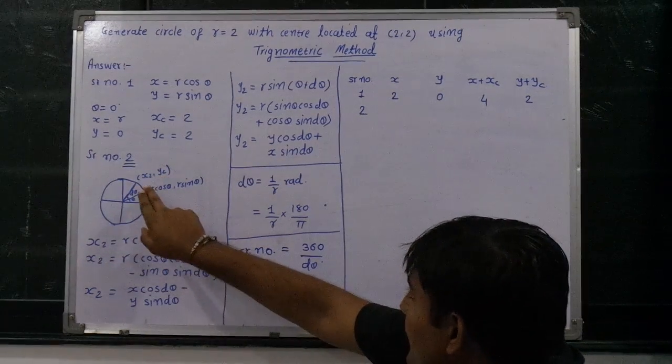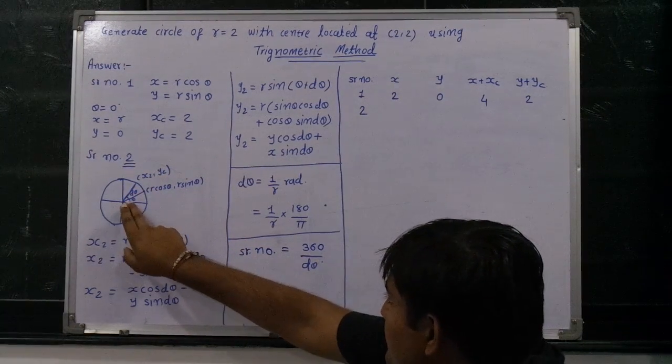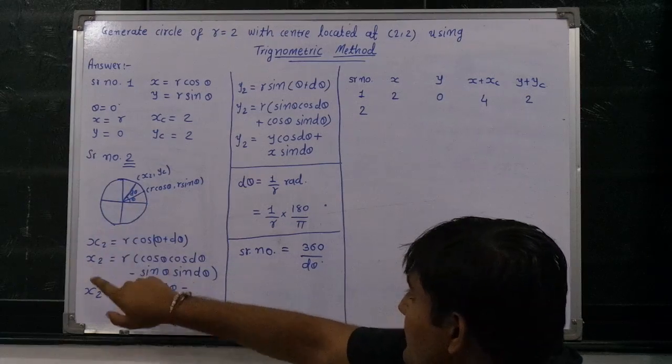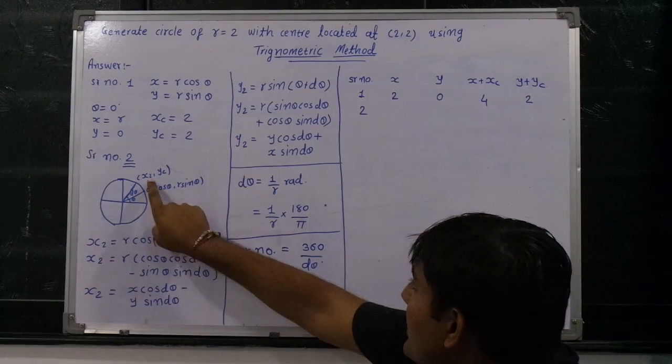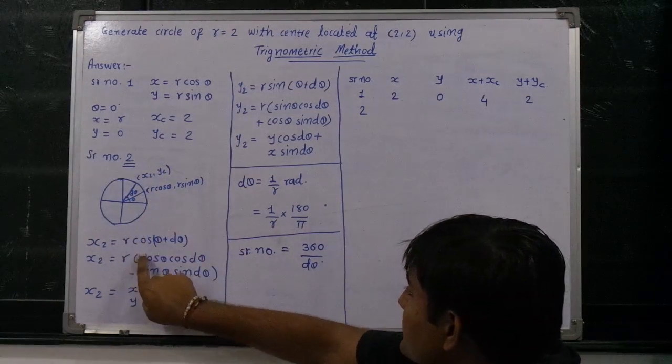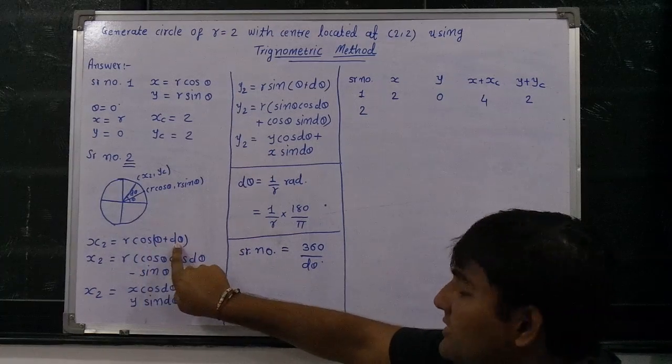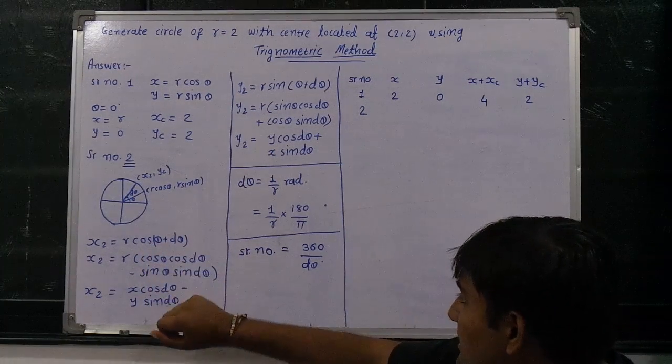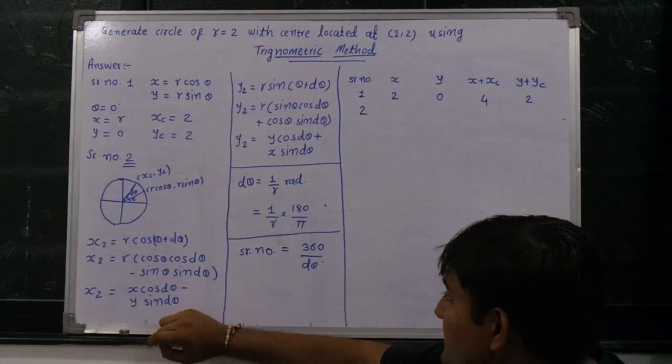So for this purpose, x2, y2, what is the equation? The total is equal to theta plus d theta. So x2 is equal to r cos(theta plus d theta). I am just opening this bracket portion.